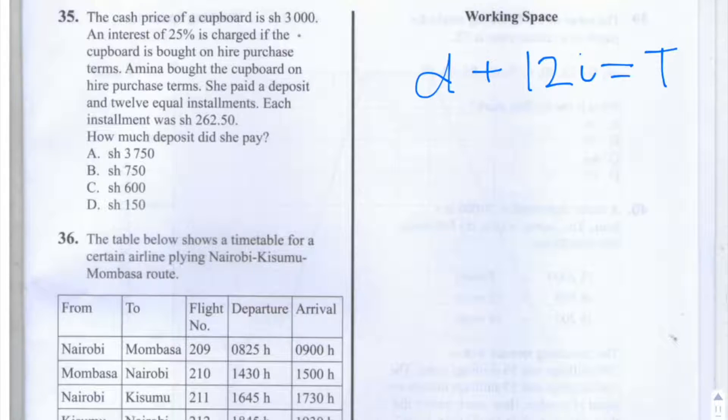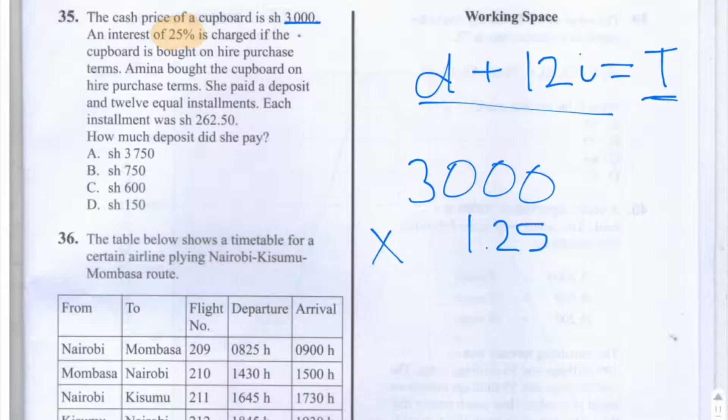We know that Amina bought the cupboard on hire purchase terms, so she pays 25% more than she would if she bought it just using cash. That means she pays 3,000 times by 1.25, since she's paying 25% more than she would if she bought it at cash price. So let's calculate the value of T.